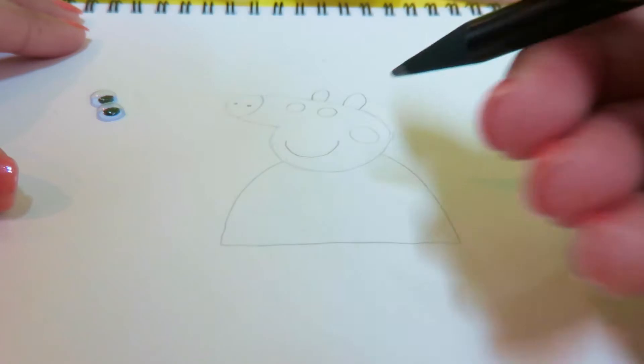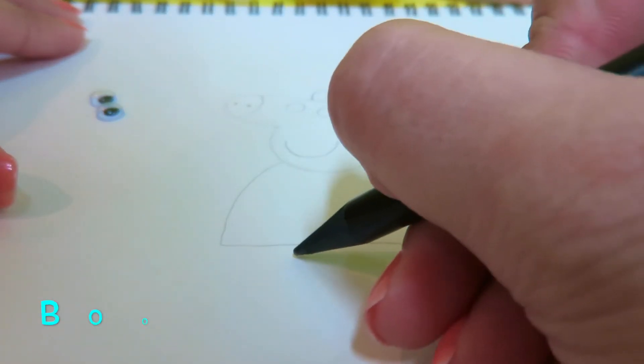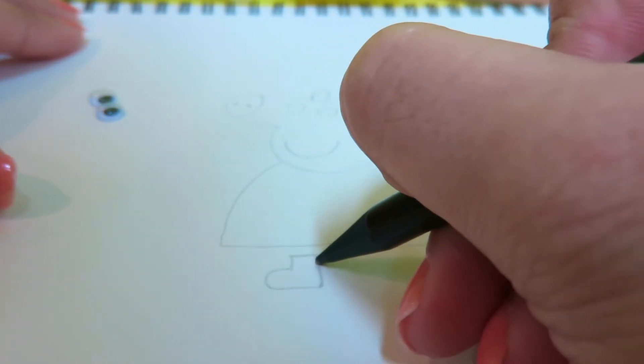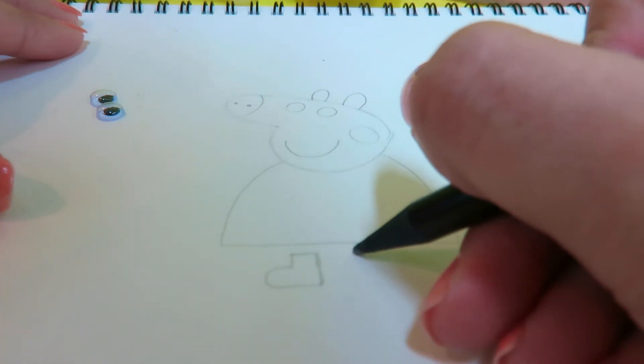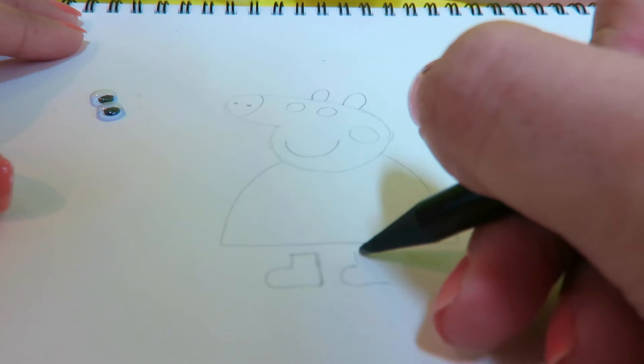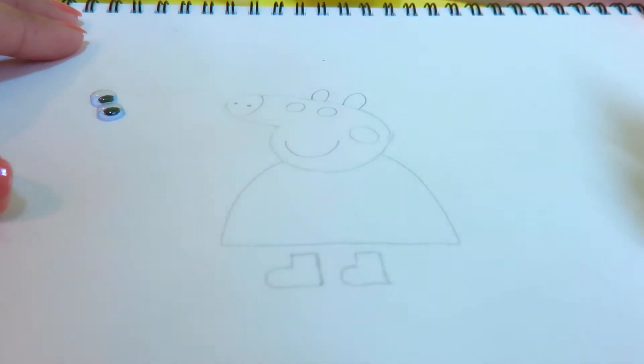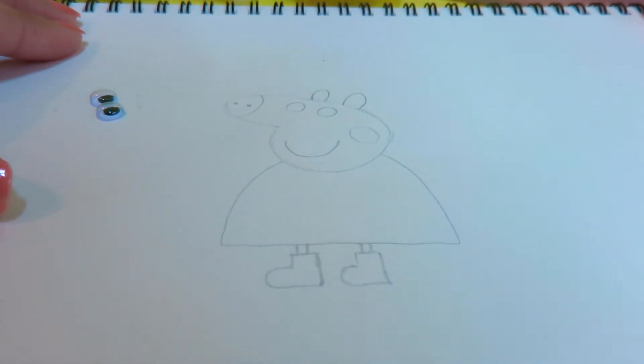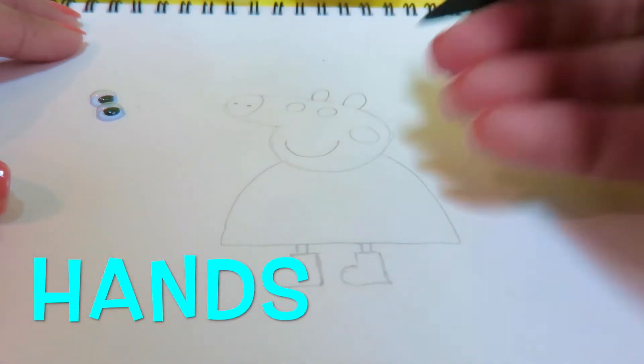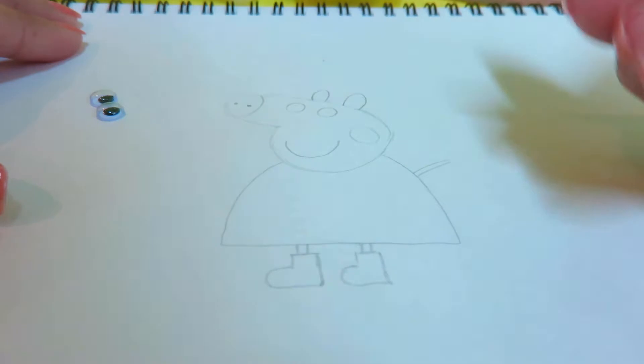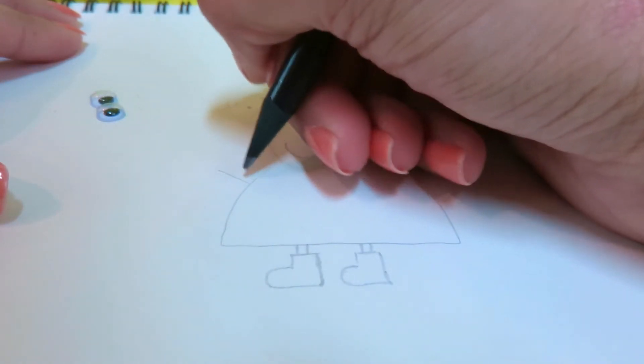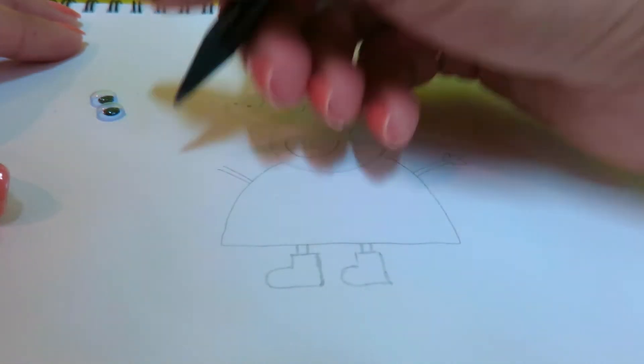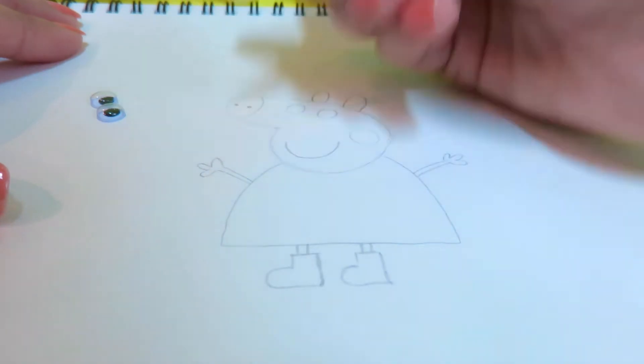Then we have the legs and the boots. To make it easier, let's draw the boots first. One more here. And then the legs inside. Similarly, you make the hands. Thin hands. With his fingers. Like this.